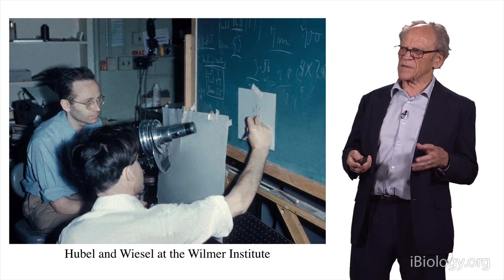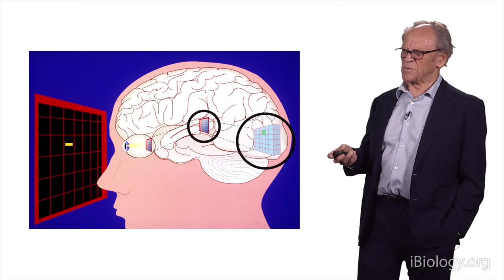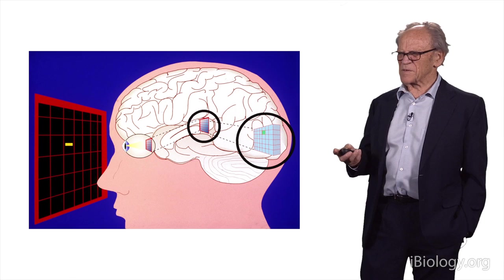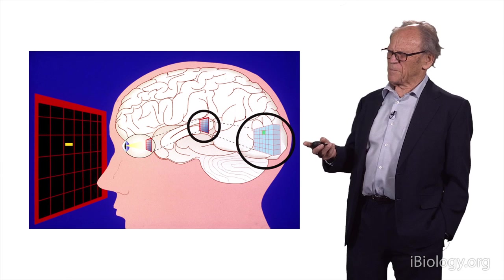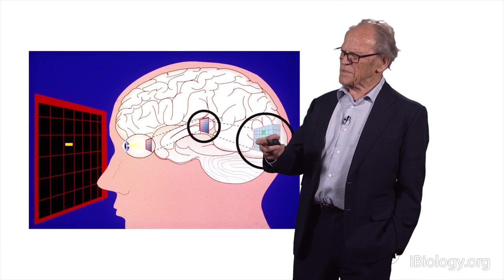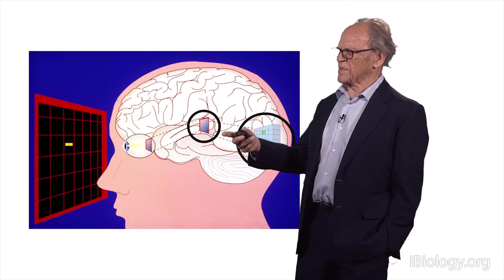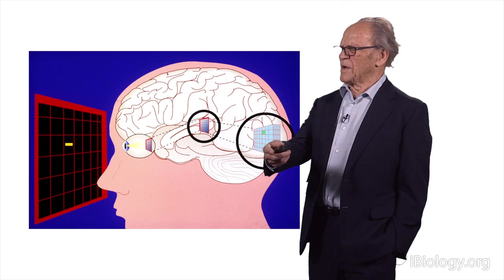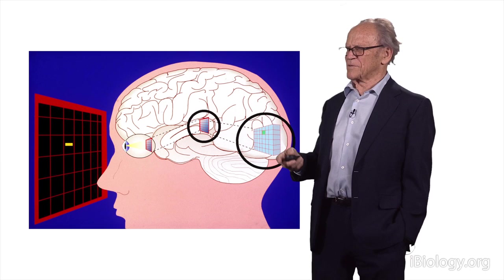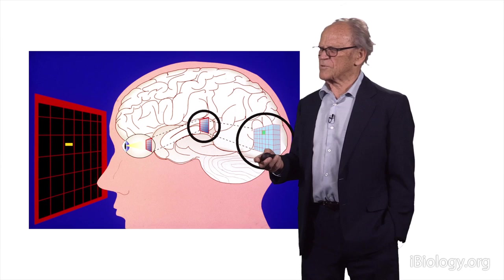It might be easier to understand using this graph. This is a human head. We only worked on anesthetized cats and monkeys, but the system is very similar in man and particularly in the monkey. Here you can see the eye, and the person is looking at the screen. You can see the squares on the screen. The eye projects to the relay nucleus, the retinal ganglion cells project, and then the relay nucleus projects to the visual cortex, which is the two circles. David and I spent about 20 years trying to understand all this beautiful structure.